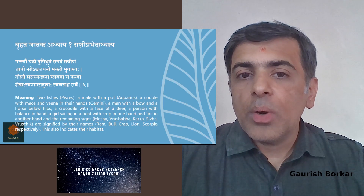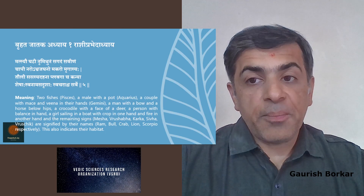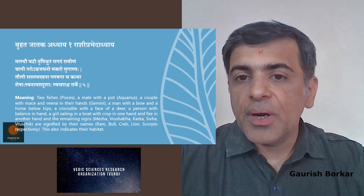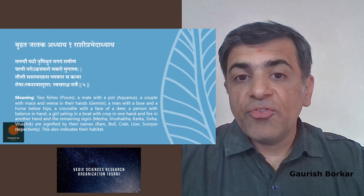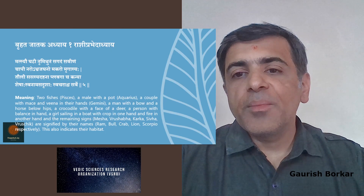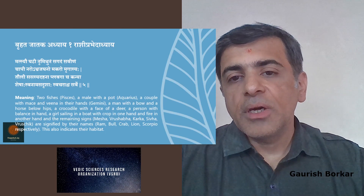A man with a bow and a horse below hips — that's Sagittarius. A crocodile with the face of a deer — that's Capricorn. A person with a balance in hand — that's Libra. A girl sailing in a boat with a crop in one hand and fire in another — that's Virgo. The remaining signs — Mesh, Vrushab, Karka, Simha, and Vrushchik — are signified by their names: Ram, Bull, Crab, Lion, and Scorpio respectively.